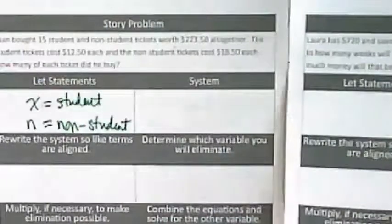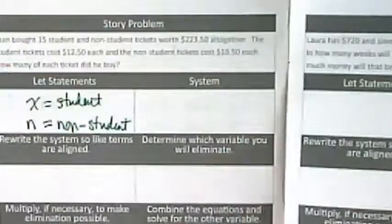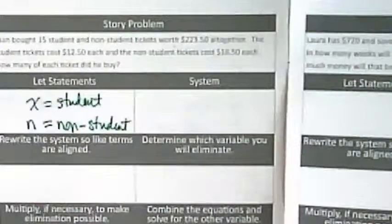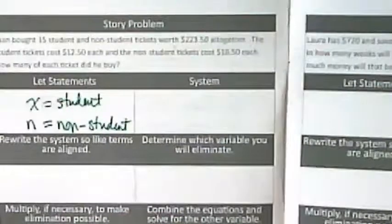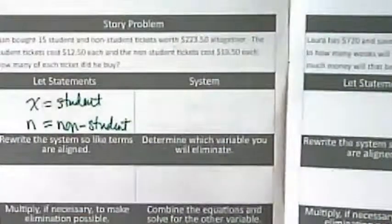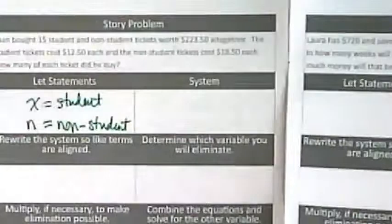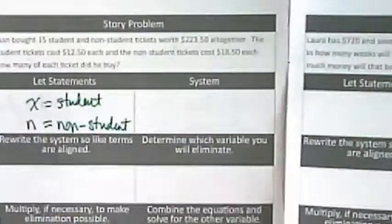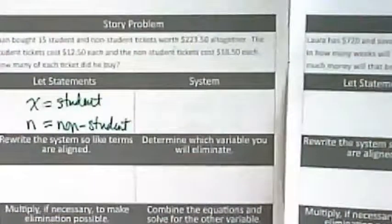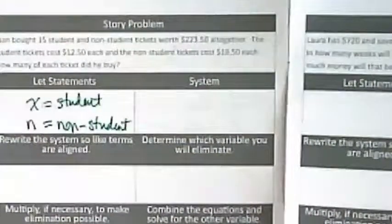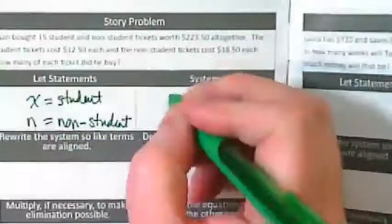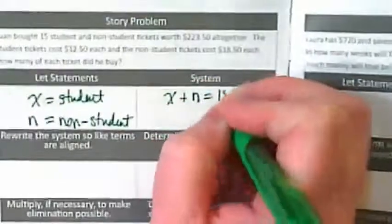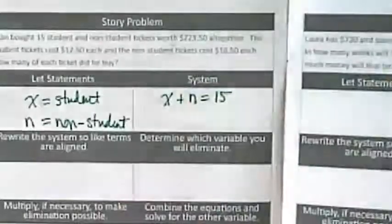Because now that we've got our statements showing what variables, we know our solution is going to be finding out how many student tickets, how many non-student tickets. To do that, we have to write our equations. The first sentence says Juan bought 15 student tickets and non-student tickets. How many total tickets did he buy? So let's just write X plus N equals 15 as one of our two equations.